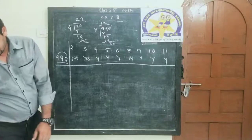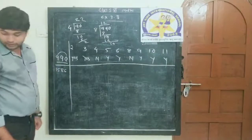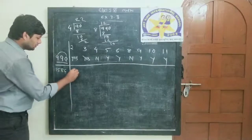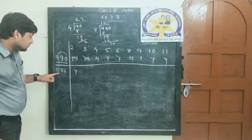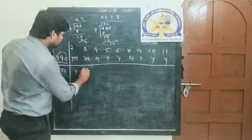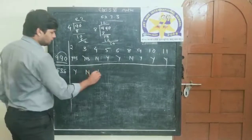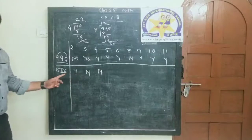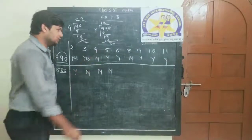Next number: 1586. Is it divisible by 2? Yes, because 6 is an even number. Is it divisible by 3? Sum of digits: 1 plus 5 plus 8 plus 6 equals 20. 20 is not divisible by 3, so no. Is it divisible by 4? Last two digits are 86: 86 divided by 4 leaves a remainder of 2, so no. Is it divisible by 5? No 0 or 5 in the unit digit, so no. Is it divisible by 6? Not divisible by both 2 and 3, so no.